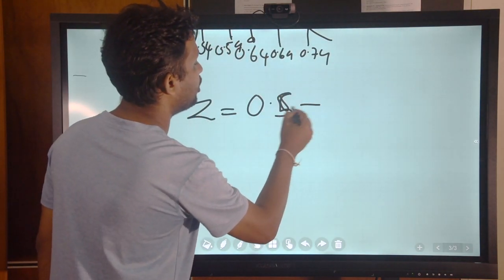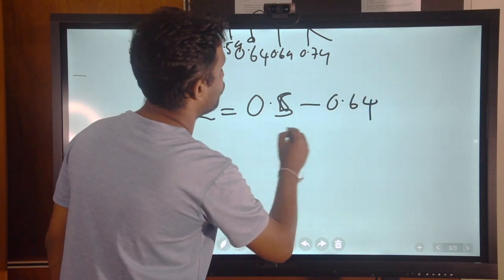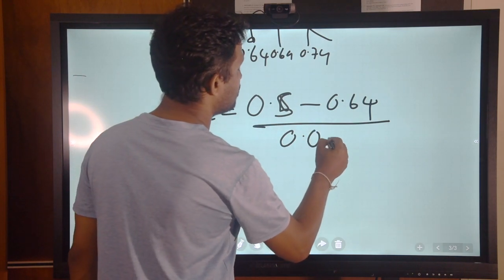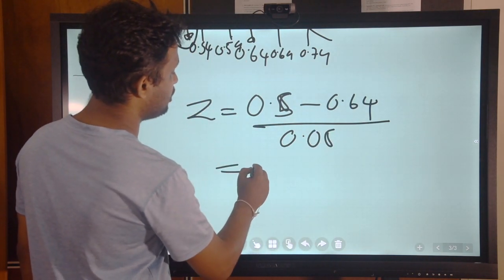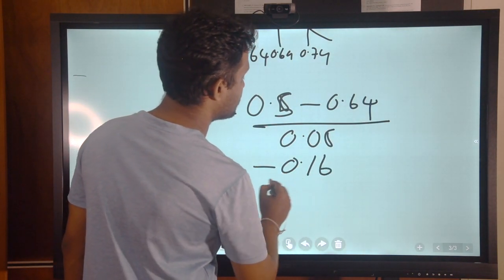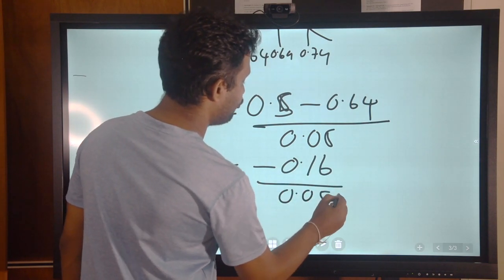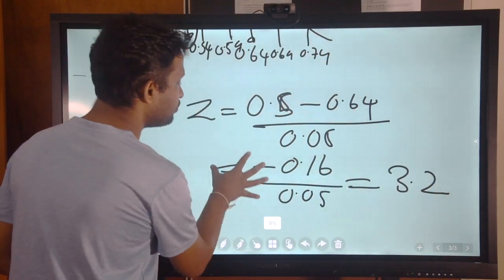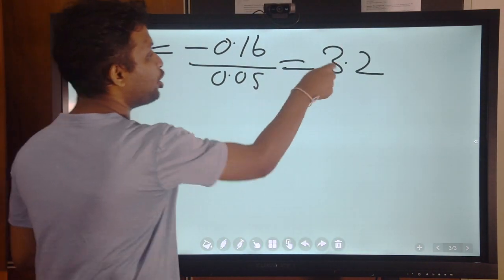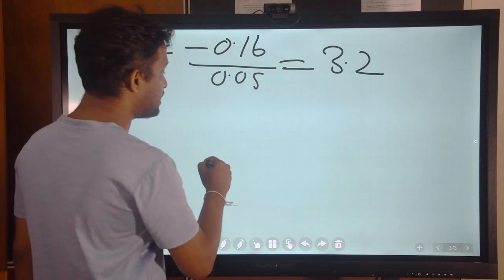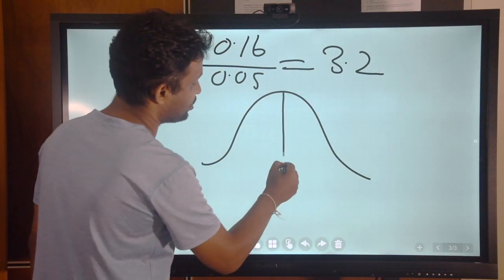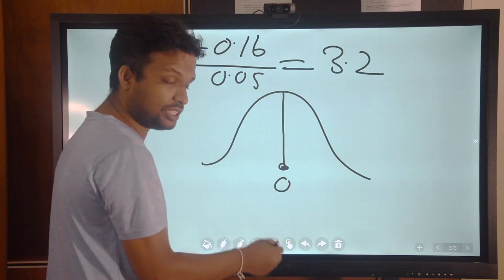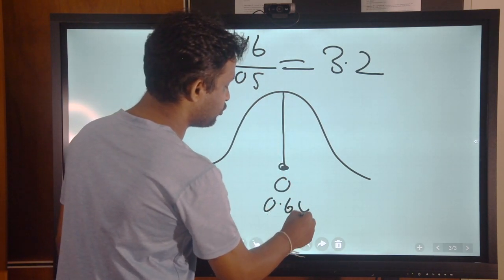The Z value is 0.5 minus 0.64 divided by the standard error, which is 0.05, which equals minus 0.14 divided by 0.05, which equals minus 2.8. So now we have to plot this minus 2.8 in the standard normal distribution. So standard normal distribution here at the center, it is 0. The corresponding value for the 0 is 0.64.